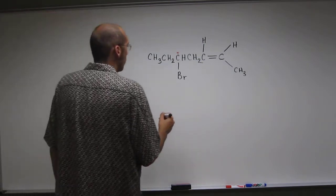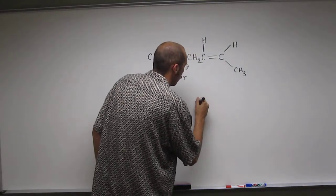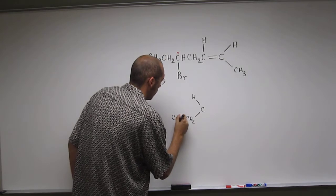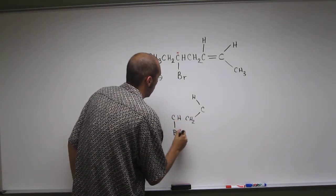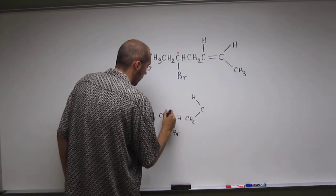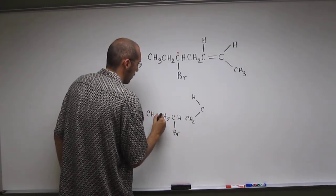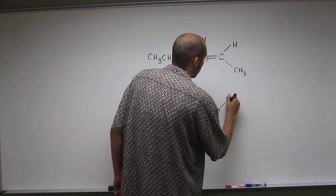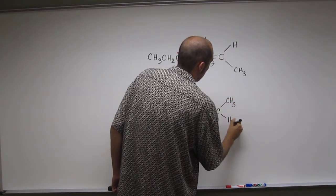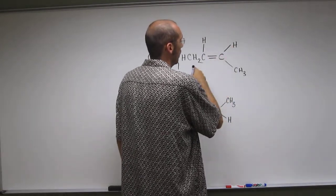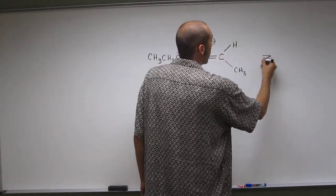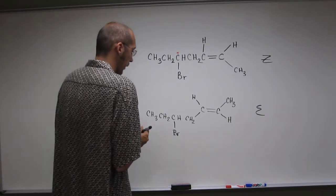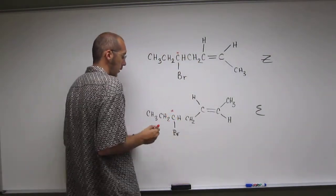And of course, you can have the other one to where these guys are in the same spot, but the hydrogen and the methyl group are switched. So in this case, you have the two big groups on the same side, so this is the Z-alkene, and this is the E-alkene. And then there's your stereocenter.